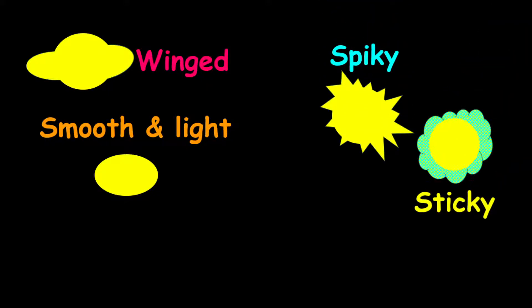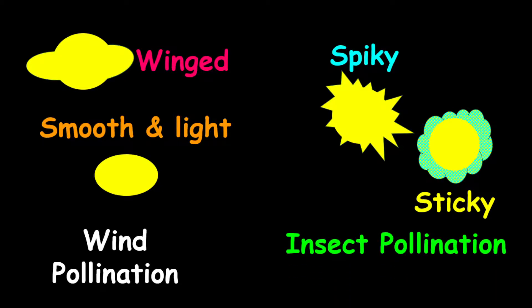Now we also have different shapes of pollen grains. We have those that are winged, those that are smooth and light, those that are spiky, and those that are sticky. The ones that are winged and smooth and also light, they are for wind pollination. Those that are sticky and spiky are used in insect pollination.